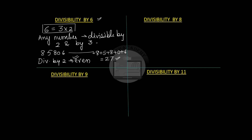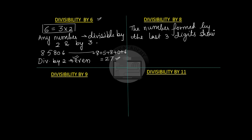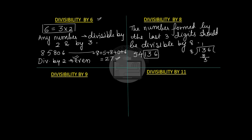Divisibility by 8 says that a number is divisible by 8 if the last 3 digits are divisible by 8. For example, take the number 54136. The number formed from the last 3 digits is 136. Dividing 136 by 8: 8 times 17 equals 136, remainder 0. Since 136 is completely divisible by 8, the number 54136 is divisible by 8.